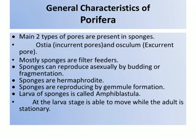Spongiae — ostia — are found in millions in number, but osculum is found in one to three in number. Mostly sponges are filter feeders because they are sessile and sedentary. They depend on minerals in the water and the debris of some microorganisms for their nutrition.